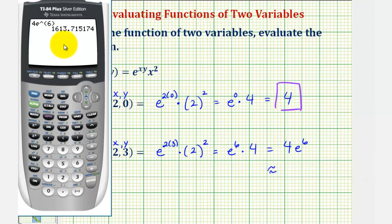If we round to four decimal places, this would be approximately 1,613.7152.